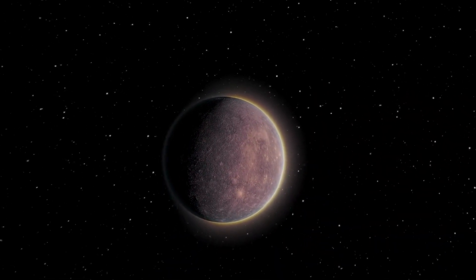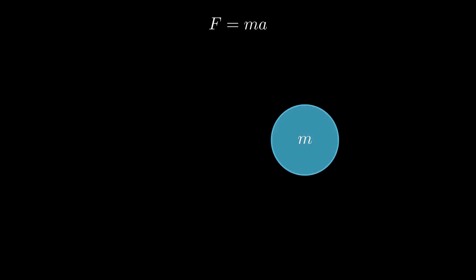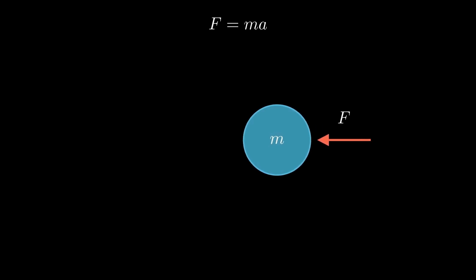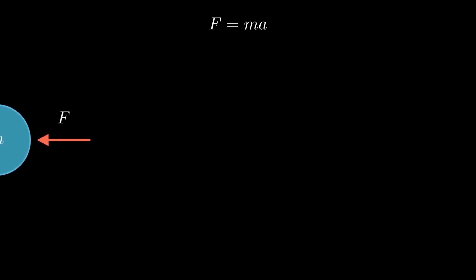This is one of the tests that showed the effectiveness of Einstein's theory. Let us start by writing Newton's Second Law. That is, if an object of mass m has a force applied to it, its acceleration will be given by the force divided by the mass.